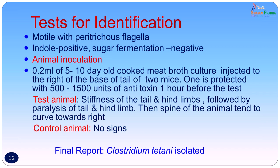The identification tests used for this culture were: motility — the organism had a stately motility suggesting peritrichous flagella; indole was positive; and sugar fermentation was negative. Confirmation was done by animal inoculation to demonstrate the toxin. 0.2 ml of a 5-to-10-day-old cooked meat broth culture was injected into the base of the tail of two mice; one was protected with 500 to 1500 units of antitoxin one hour before. The test animal developed stiffness and paralysis of the tail and hind limb, and the spine curved toward the right. No signs were seen in the protected control animal. The final laboratory report was: Clostridium tetani isolated. No sensitivity testing was done as Clostridium is not known to develop resistance.